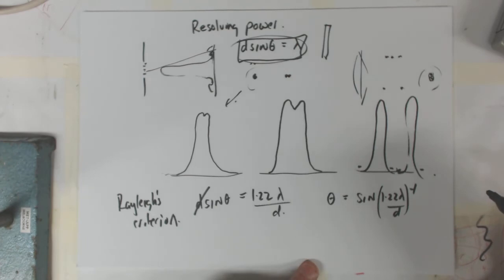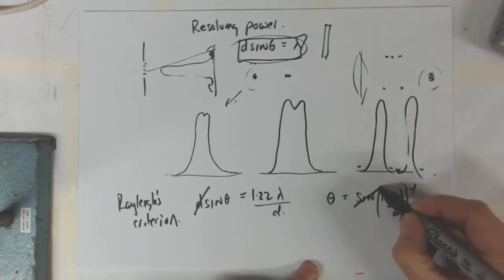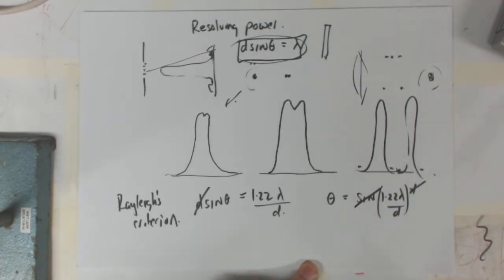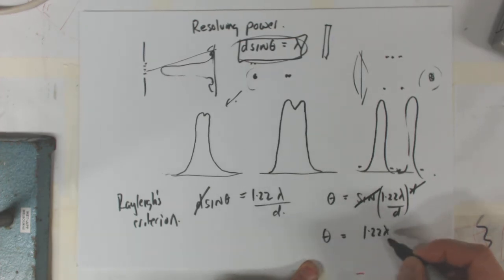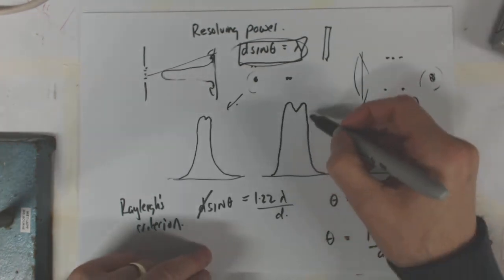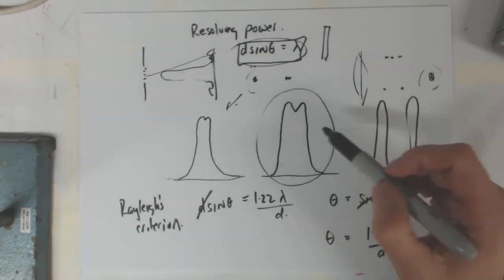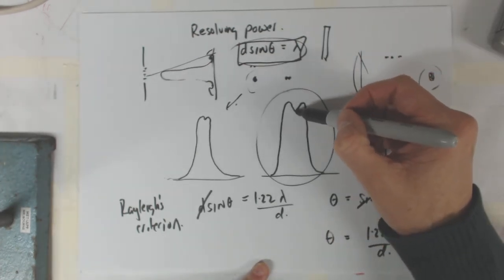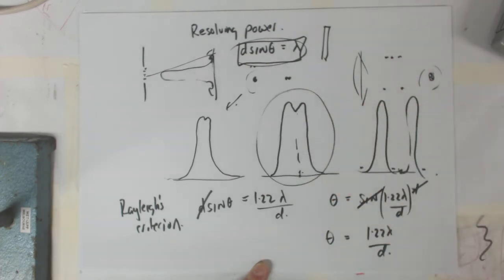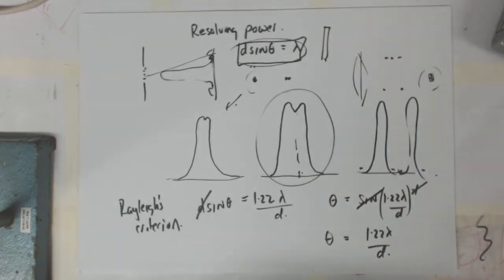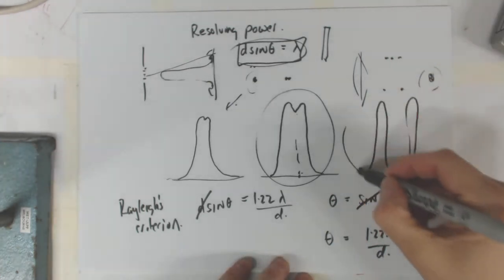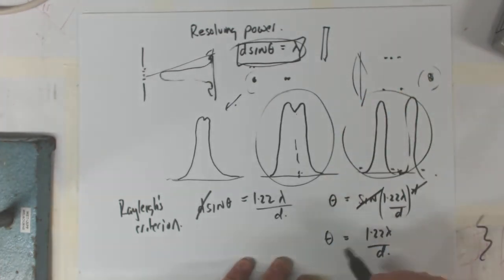And what they end up doing is actually dropping the sine for small angles and using theta in radians, and we basically just say it's 1.22 wavelengths over d. That's the smallest you're going to be able to resolve, where you've got the maxima of one in the same location as the minima of another. You need to have an angular separation bigger than that to get that, and the angular separation is this, which we've already worked out.